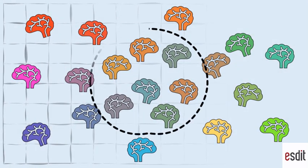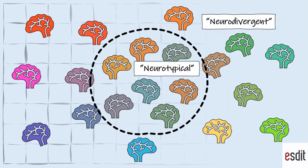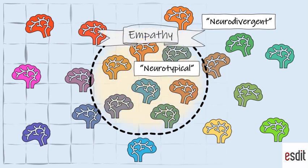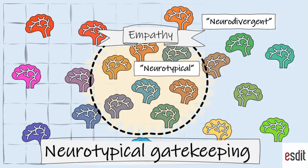Empathy is then reserved to a subset of people based on certain assumptions about how you should express a feeling in order for it to be valid, in order for it to count as a true experience. This is what I call neurotypical gatekeeping of empathy.